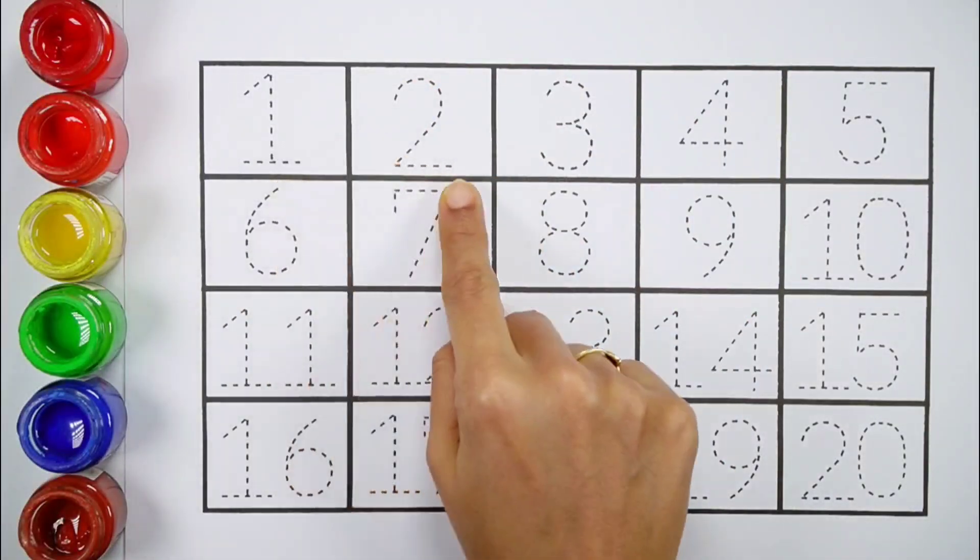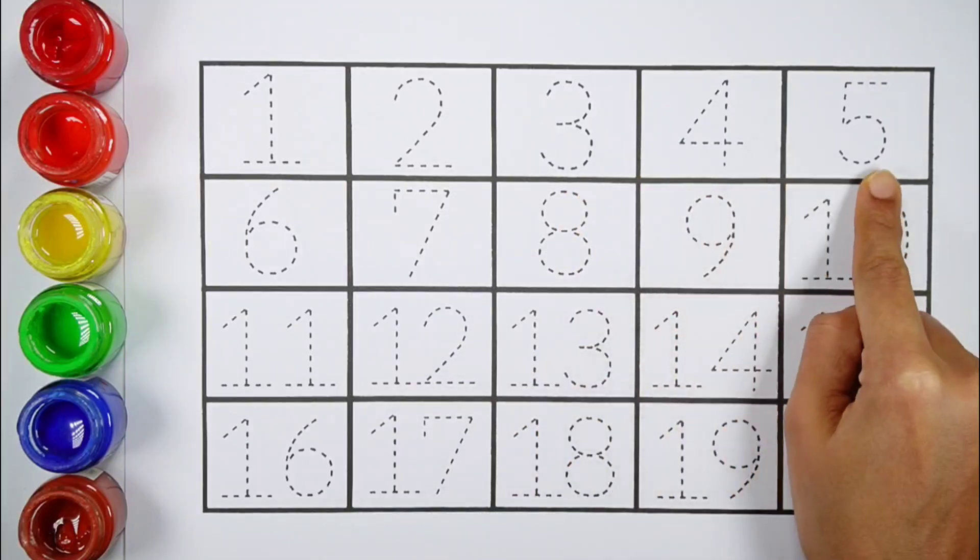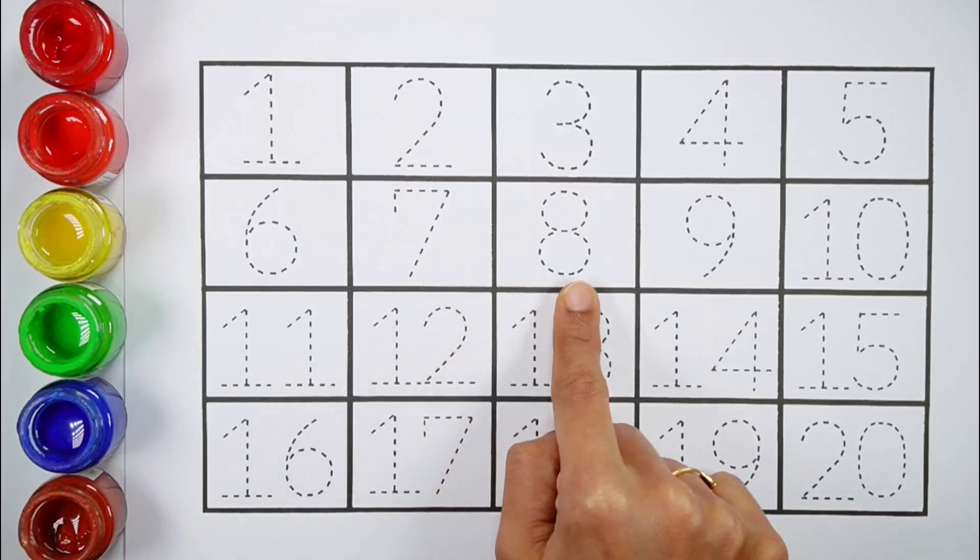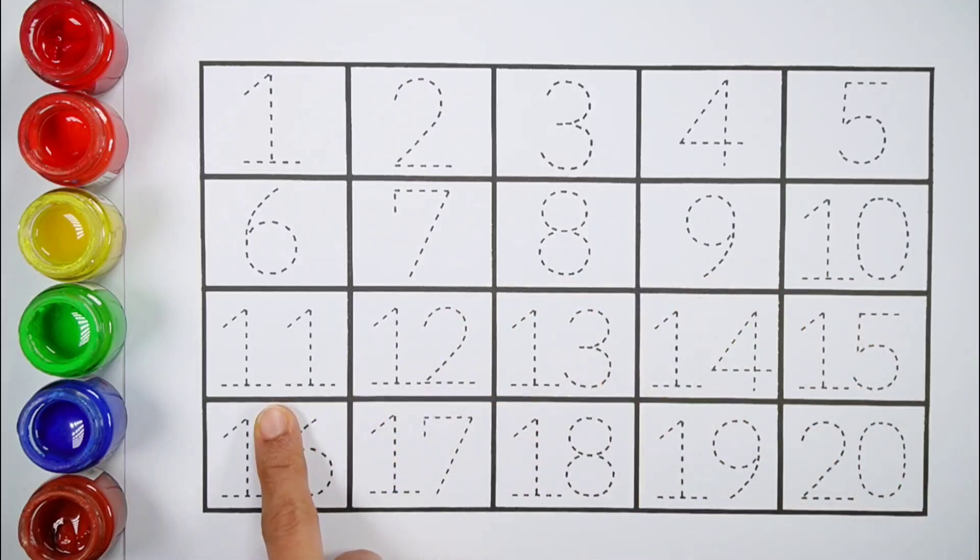1, 2, 3, 4, 5, 6, 7, 8, 9, 10, 11, 12, 13, 14, 15, 16, 17, 18, 19, 20.